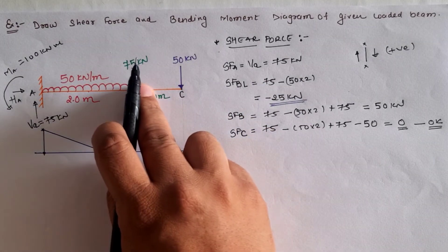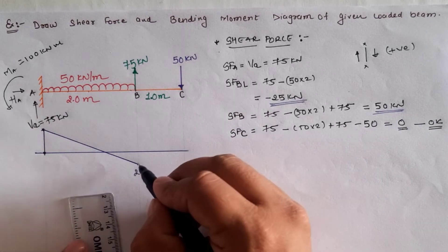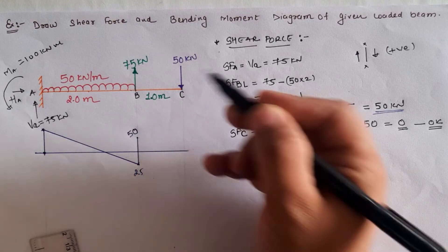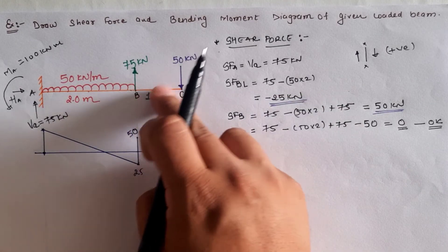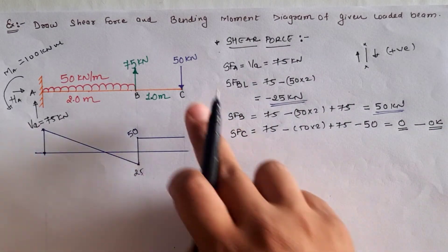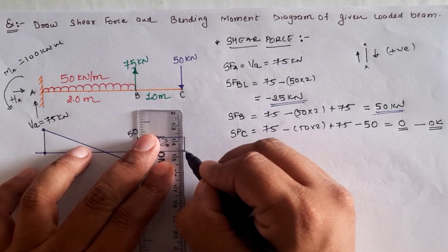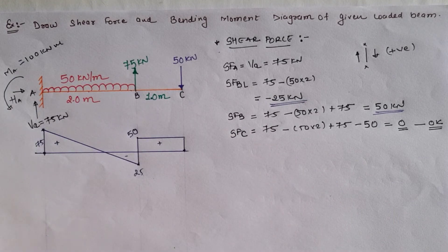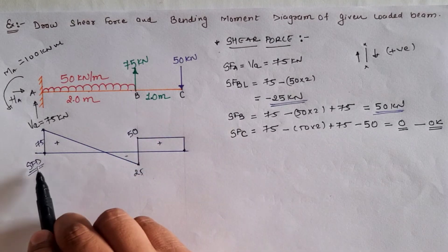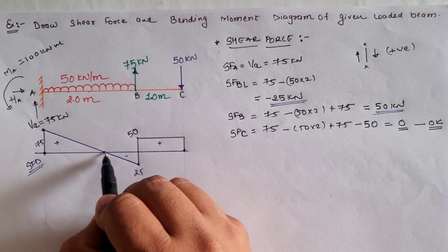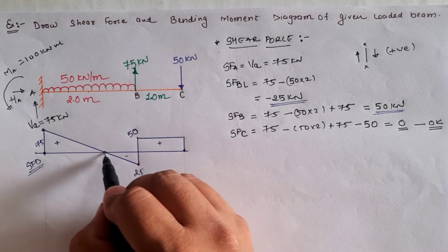At location B, considering the 75 kilonewton load, the value jumps from minus 25 to positive 50 kilonewton, shown as a vertical line upward. From B to C there is no load, so the shear force diagram is a horizontal straight line. Exactly at point C the value is zero. Observing the shear force diagram between A and B, there is a zero shear force point which indicates the location of maximum bending moment; this point is labeled D.